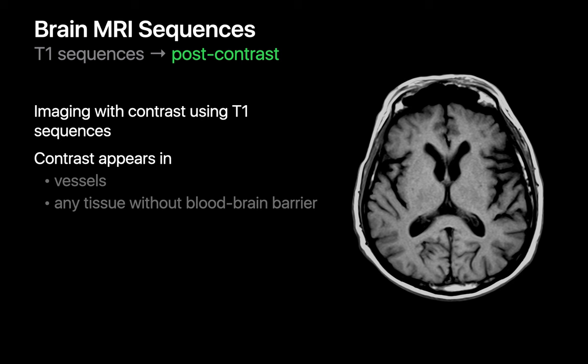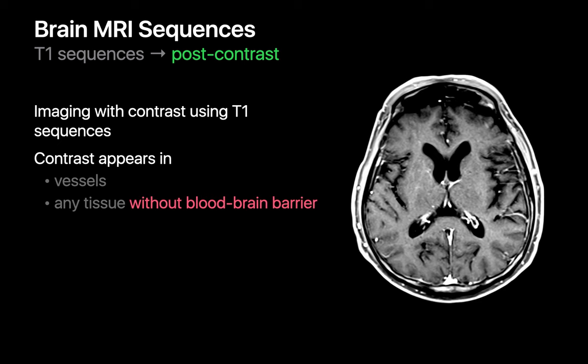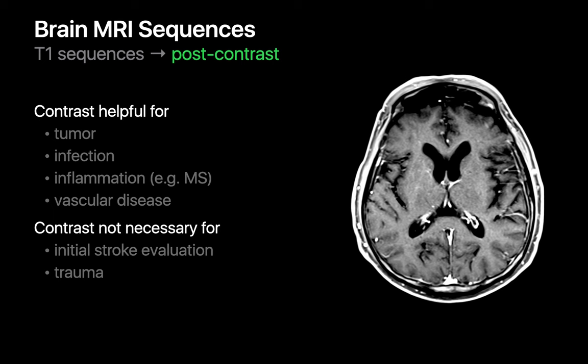Sometimes we can do T1-weighted imaging after we've injected a gadolinium-based contrast agent into the patient's bloodstream. The contrast causes the lumen of blood vessels and any tissue without a blood-brain barrier to appear bright on T1-weighted imaging. The blood-brain barrier is a layer of cells that protects the brain from potentially hazardous materials in the bloodstream, and as a side effect, usually keeps IV contrast out too. However, in many disease states, the blood-brain barrier may break down, allowing us to recognize and study areas of tumor, infection, inflammation, or vascular disease in the brain more easily.